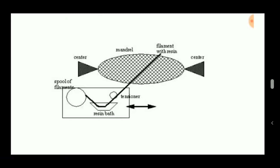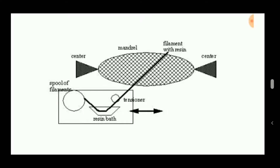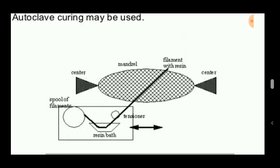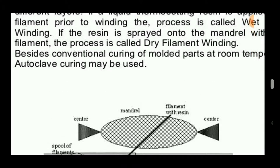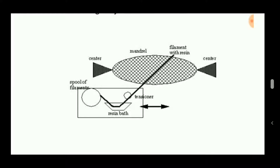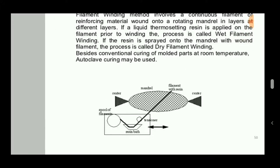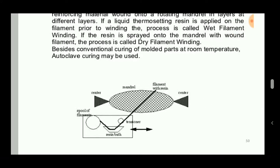Hello viewers, welcome to Engineering Study Materials. Today we are going to discuss an amazing process for the processing of ceramic or polymer matrix composites — that is the filament winding process. This process is used to produce products used for the storage of gas and some particles.